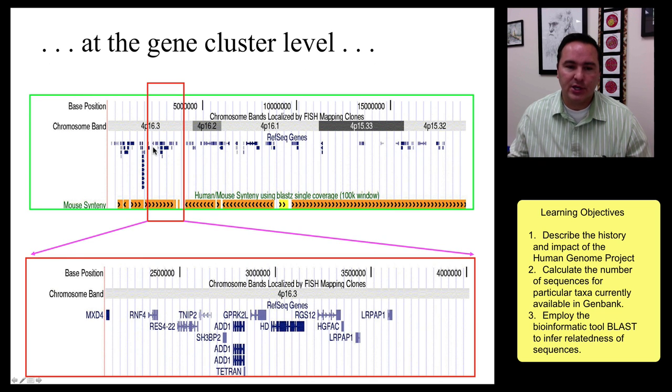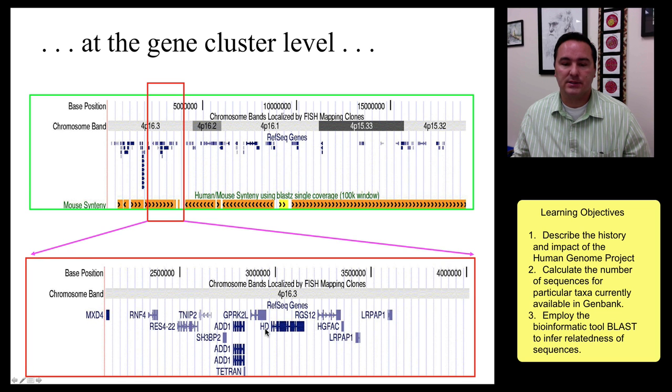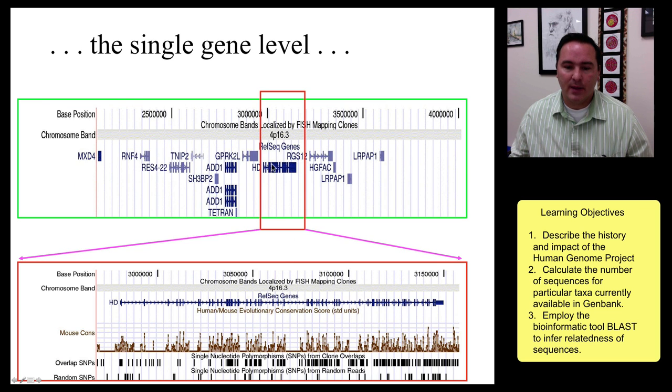So you zoom in a little bit on a chunk of these genes, and now you can actually see names across these short names, and maybe we're interested in this one called HD, which is the gene for Huntington's disease, and so we zoom in on that gene.